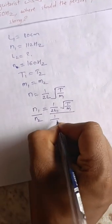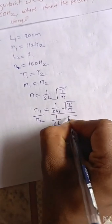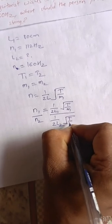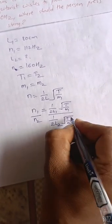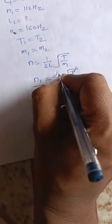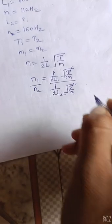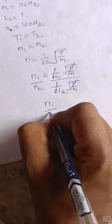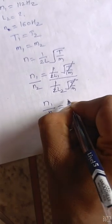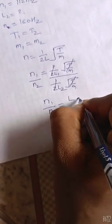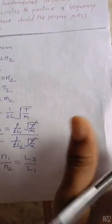n2 is equal to 1 upon 2L2 into root T upon m. Cancel the common terms: 1 by 2, root T upon m. So n1 upon n2 is equal to L2 upon L1.